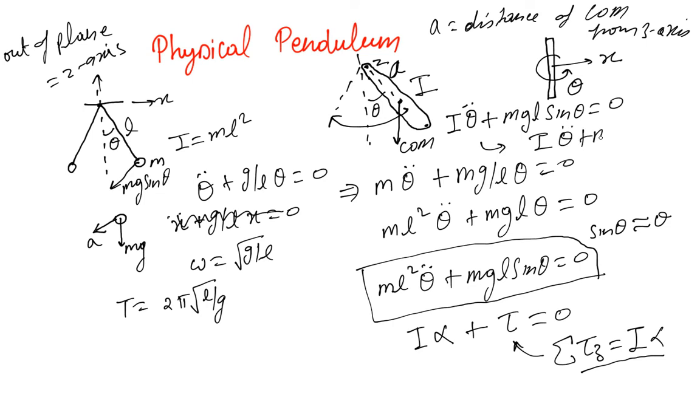So this equation actually should be written as Iθ̈ + mga sin(θ) = 0. So this is the equation for a physical pendulum.